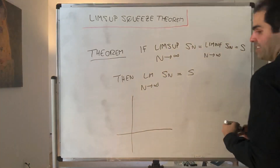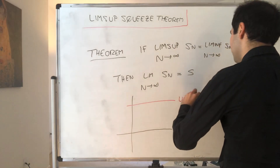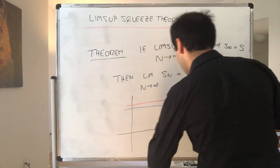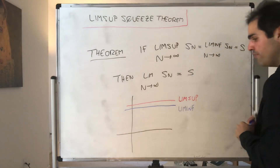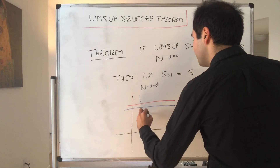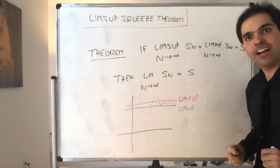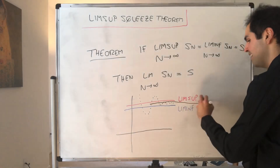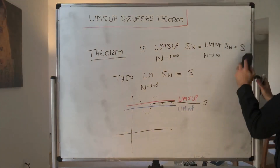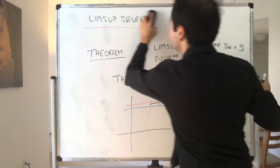In some sense this makes sense: the lim-sup is the biggest possible limit, and the lim-inf is the smallest possible limit. So if those two are equal, the sequence is forced to converge to S — because the lim-sup is the biggest value of Sn in the long run, the lim-inf is the smallest, and if they're the same, Sn has to converge to S. This is also true when S is infinity or minus infinity, but with different proofs. Today I'll focus on the finite case.